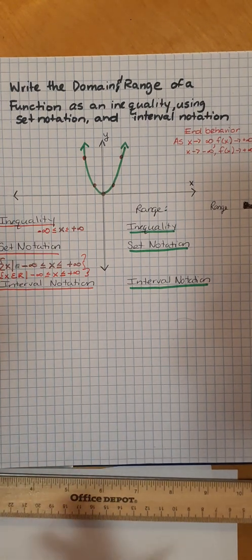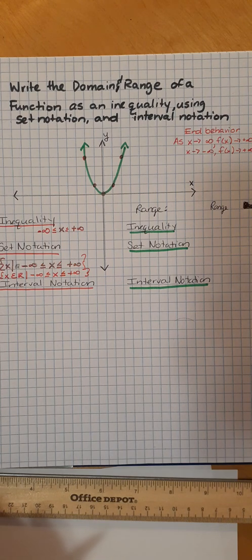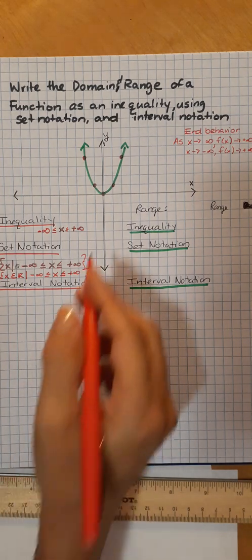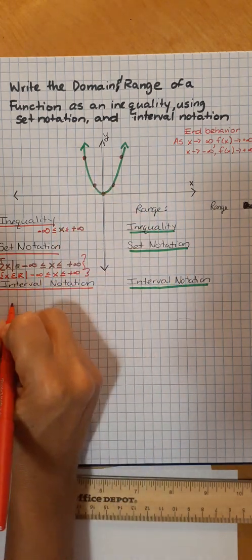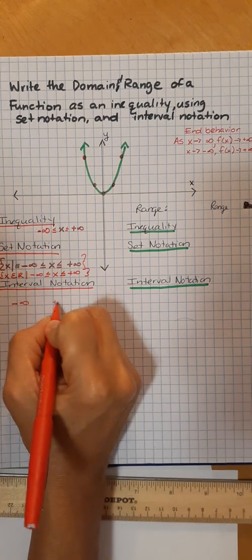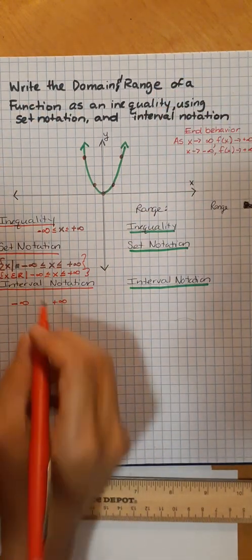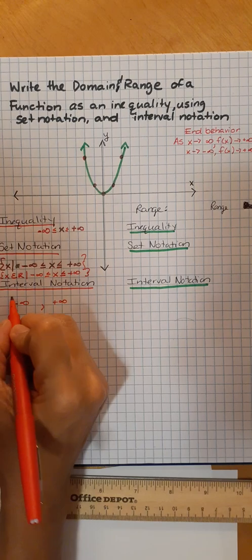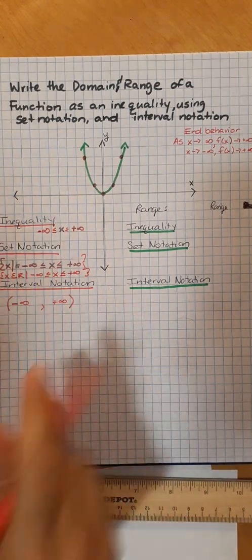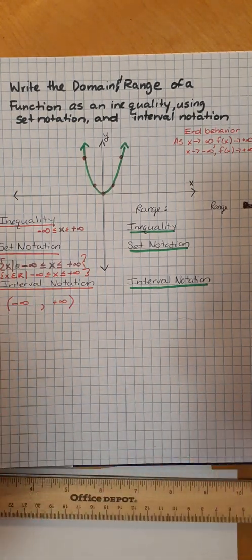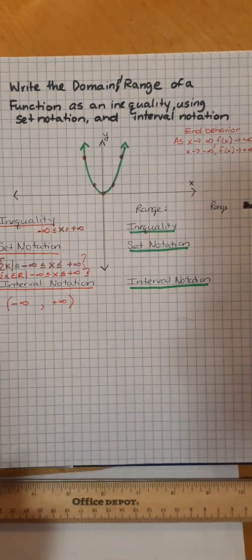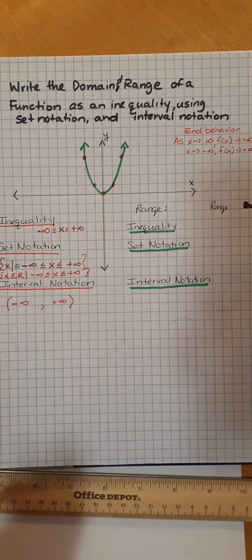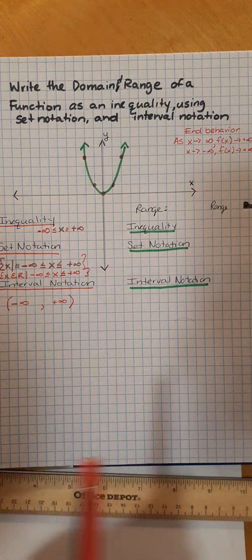Interval notation: what are the intervals? Negative infinity to positive infinity. Now, does it stop? No. So we're going to put a comma and parentheses — there's no end, it just keeps going on forever. So that is the inequality, the set notation, and the interval notation for the domain.